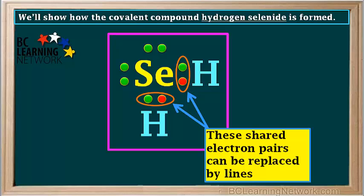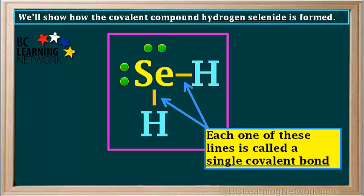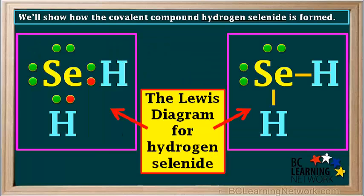So this is the Lewis diagram for hydrogen selenide. When a Lewis diagram for a covalent compound is drawn, shared pairs of electrons can be replaced by lines, like this. Each one of these lines is called a single covalent bond. Remember, a single covalent bond represents a shared pair of electrons in a molecule. So both of these are acceptable Lewis diagrams for the covalent compound hydrogen selenide. Remember, a solid line drawn between two atoms represents a covalent bond, or a shared pair of electrons. Notice the selenium atom has two lone pairs of electrons, one on the left side and one on the top.